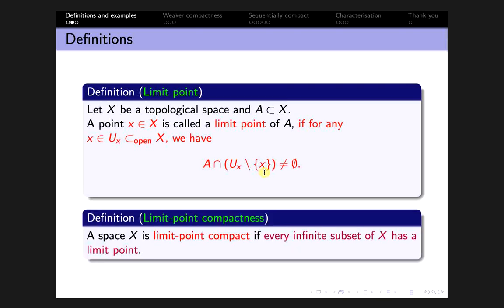Now we define limit point compactness. A topological space X is called limit point compact if every infinite subset of X has a limit point.